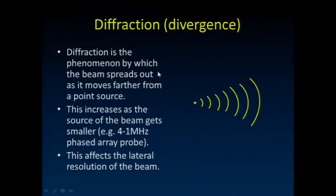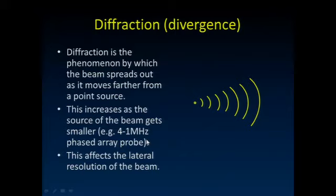Diffraction also occurs: although we want the ultrasound beam to travel as a thin pencil-like beam, it tends to diverge as it goes deeper. This divergence increases as the source gets smaller, as with phased array transducers. It doesn't affect axial resolution, but the ultrasound wave gets wider and more spread out with depth, reducing our lateral resolution.